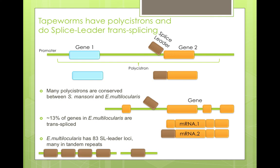In multilocularis we found 83 splice-leader loci, many in tandem repeats, and probably we can find many more. We still don't know exactly which types of genes get trans-spliced, and when they get trans-spliced, but hopefully by doing more RNA-seq we can better understand the mechanisms behind it.